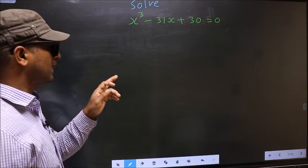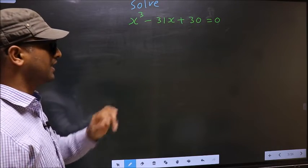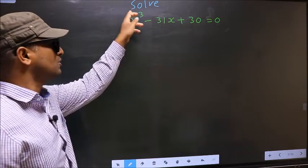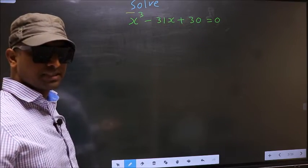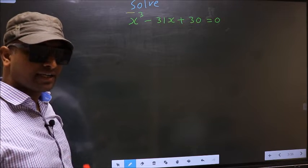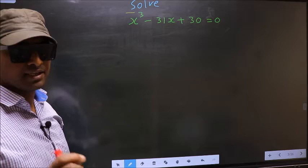Solve x cube minus 31x plus 30 equal to 0. Here they told us to solve, which means we should get the values of x. For that, here we should change the x term.